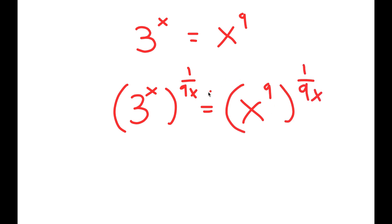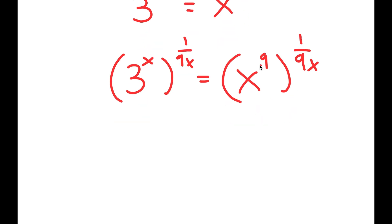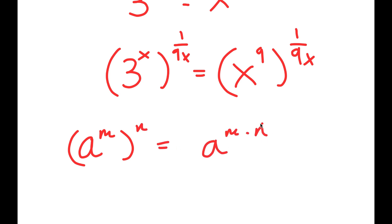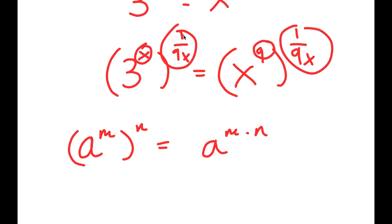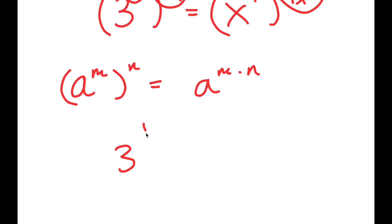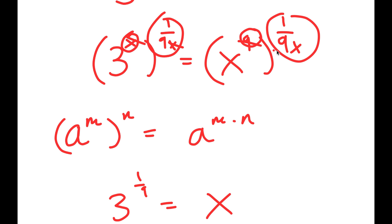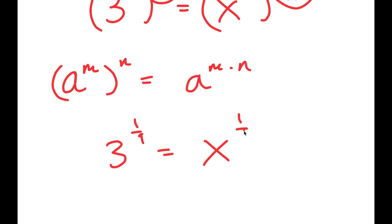The reason I'm doing this is so I can get the numbers on one side and the variables on the right side. I'm going to use the property a to the power of m to the power of n is equal to a to the power of m times n, meaning these two multiply and these two multiply. So x times 1 over 9x, the x just cancels out. So I have 3 to the power of 1 over 9, and there are no variables on this side. And then on my right hand side, the nines cancel out, so I have x to the power of 1 over x.